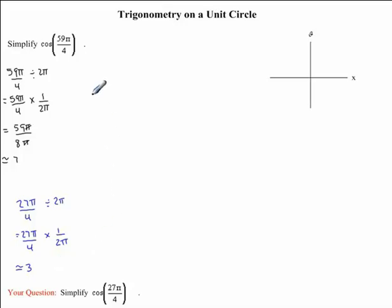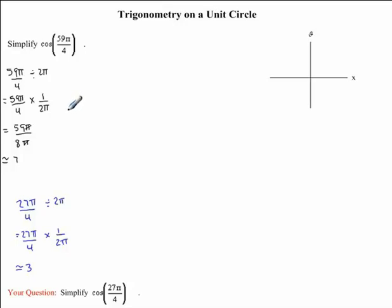Coming back to our question. When simplifying cos of 59π over 4, we don't need to take into consideration these full rotations of 2π. In our case, this angle rotated 7 times fully. So we need to find the remaining angle. We're going to do this by subtracting 7 times 2π, since this will give us the actual angle of rotation for our angle 59π over 4.